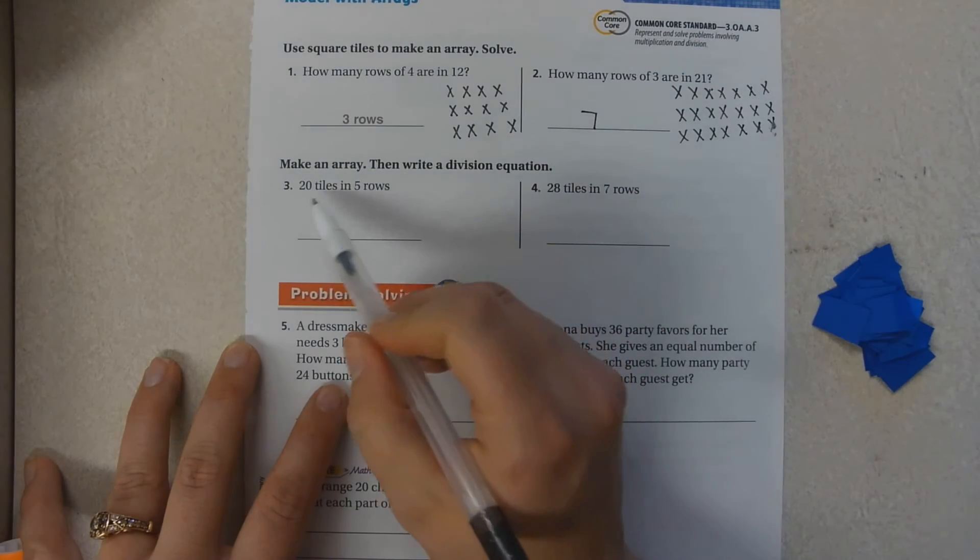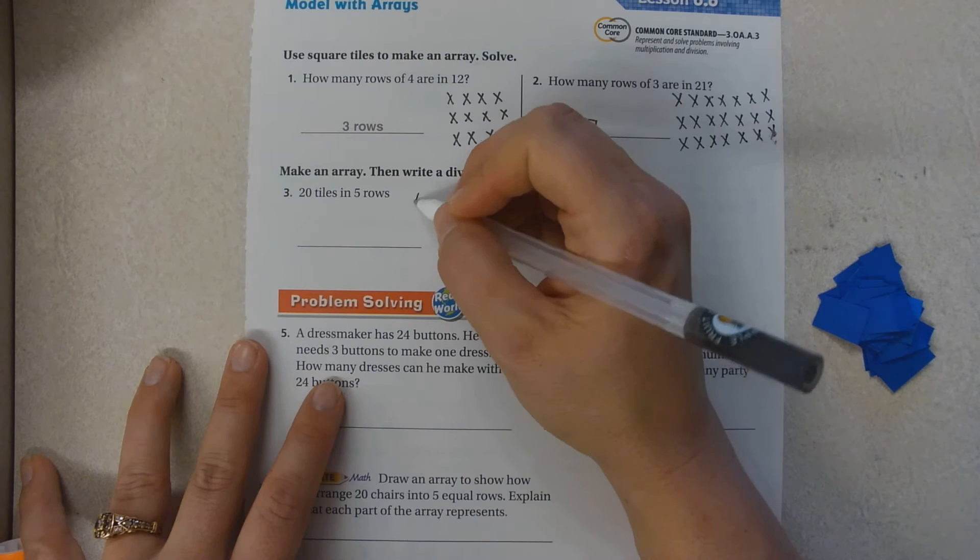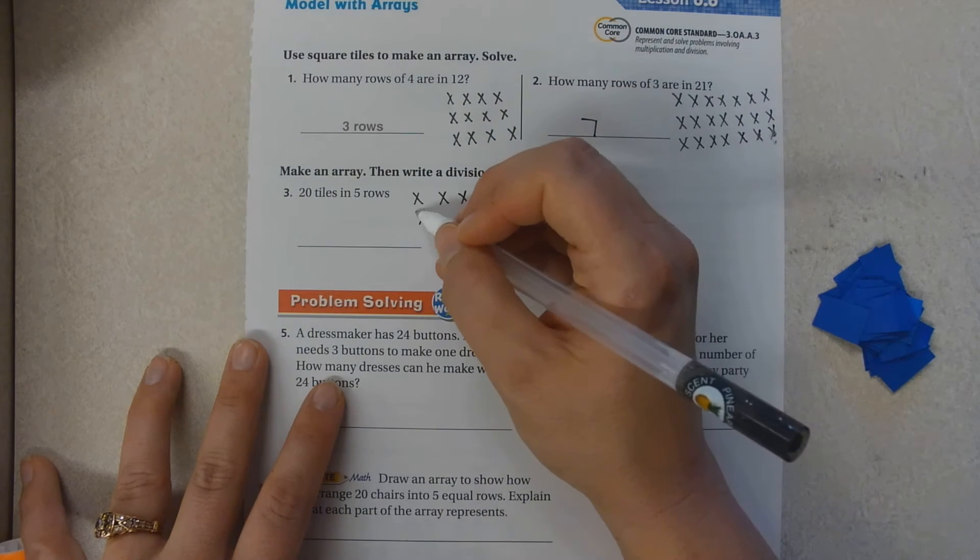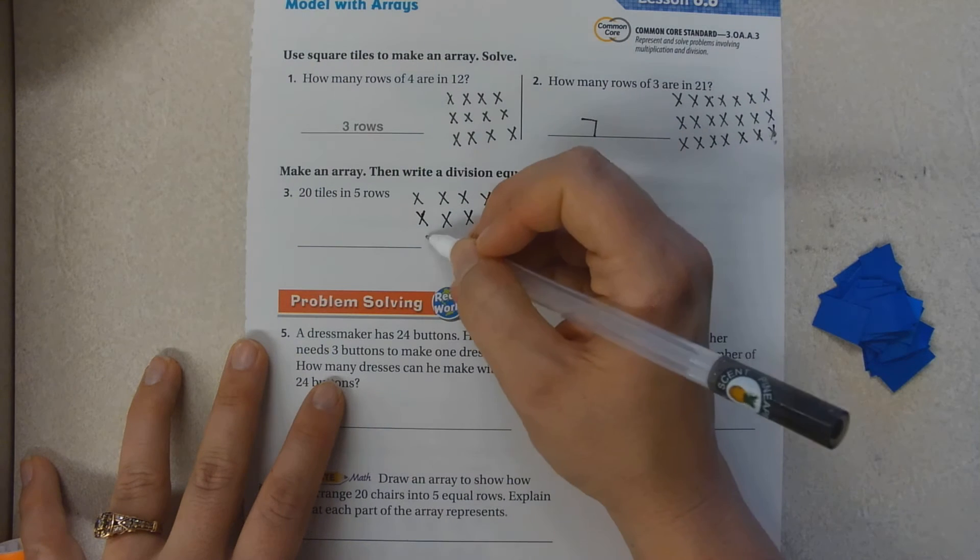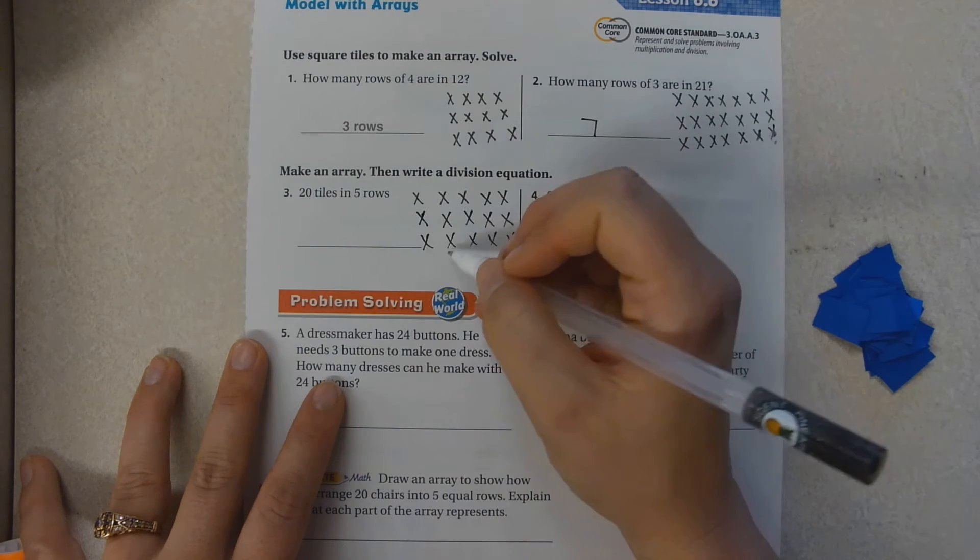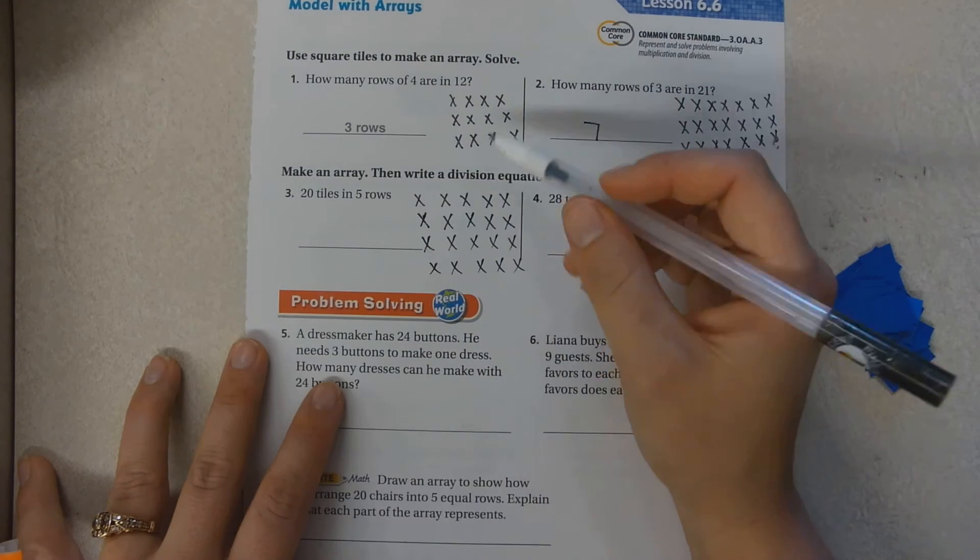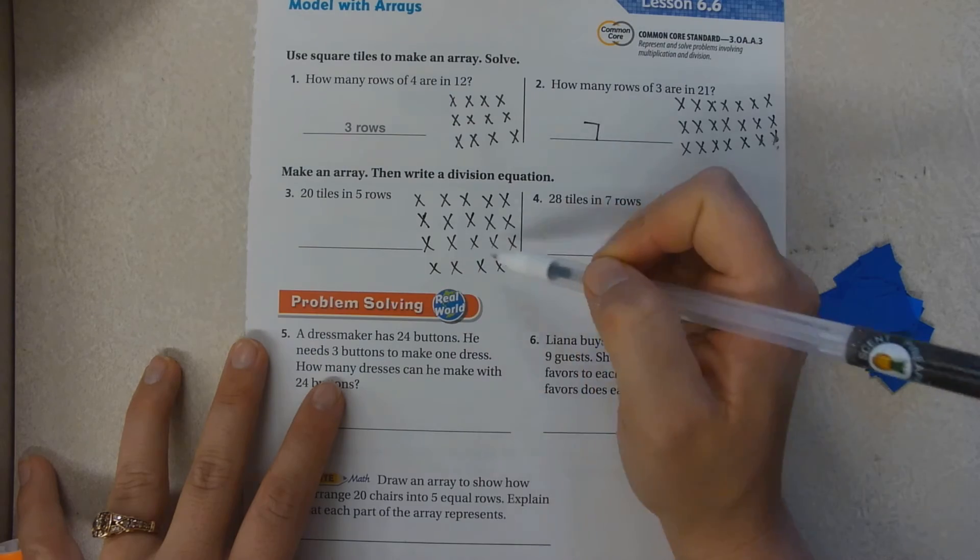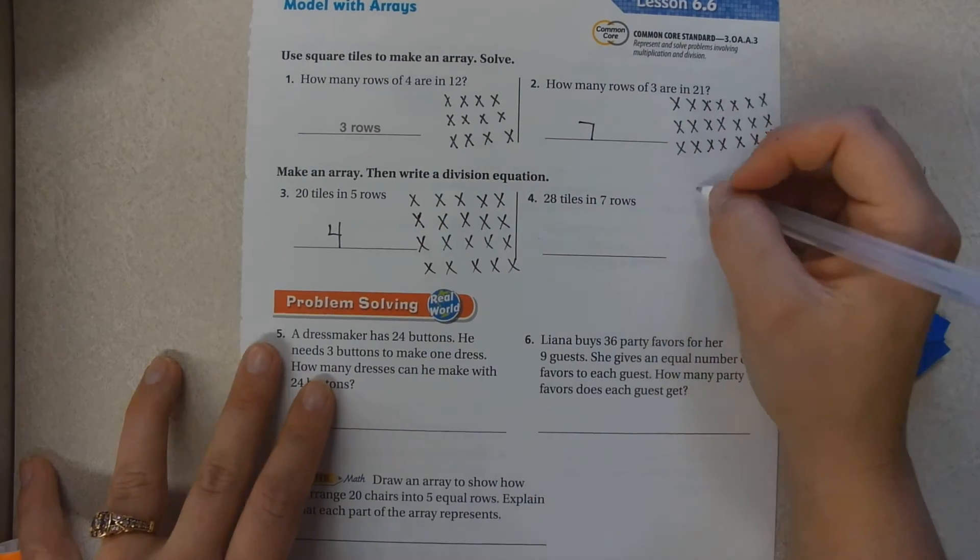To show twenty in rows of five: one, two, three, four, five, six, seven, eight, nine, ten, eleven, twelve, thirteen, fourteen, fifteen, sixteen, seventeen, eighteen, nineteen, twenty. So we have one, two, three, four groups.